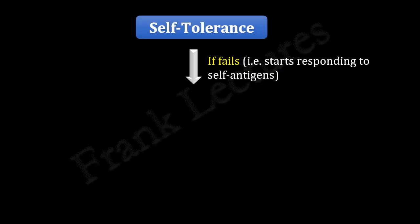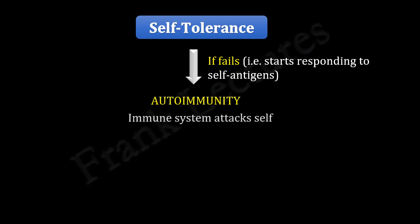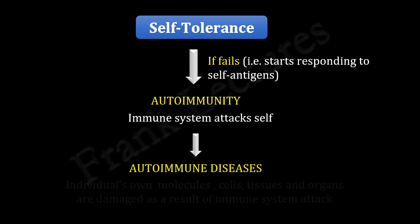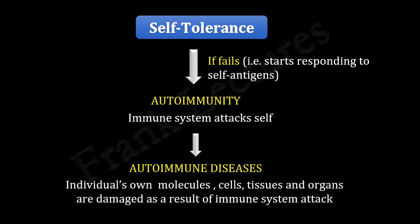If self-tolerance fails — in other words, if the immune system starts responding to self-antigens — it leads to auto-immunity, meaning the immune system starts attacking self. Further, this may result in autoimmune diseases in which an individual's own molecules, cells, tissues, and organs are damaged as a result of immune system attack.